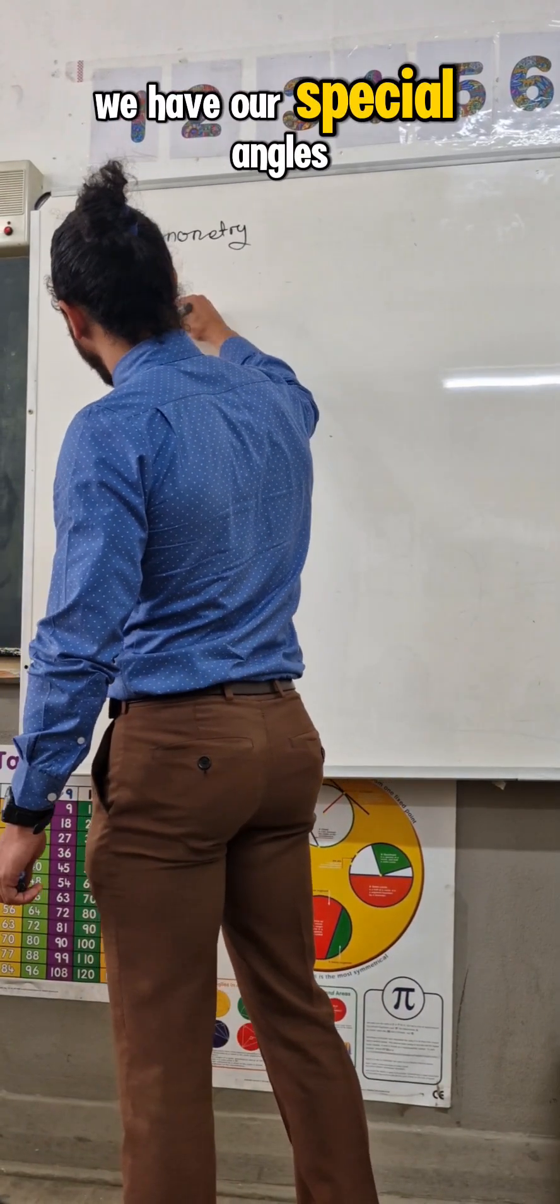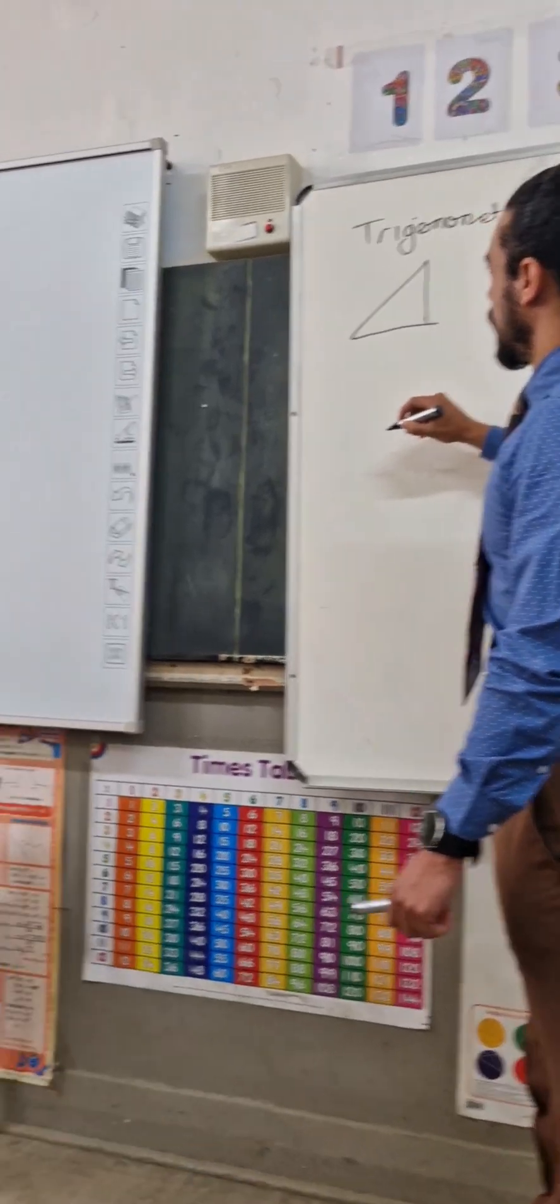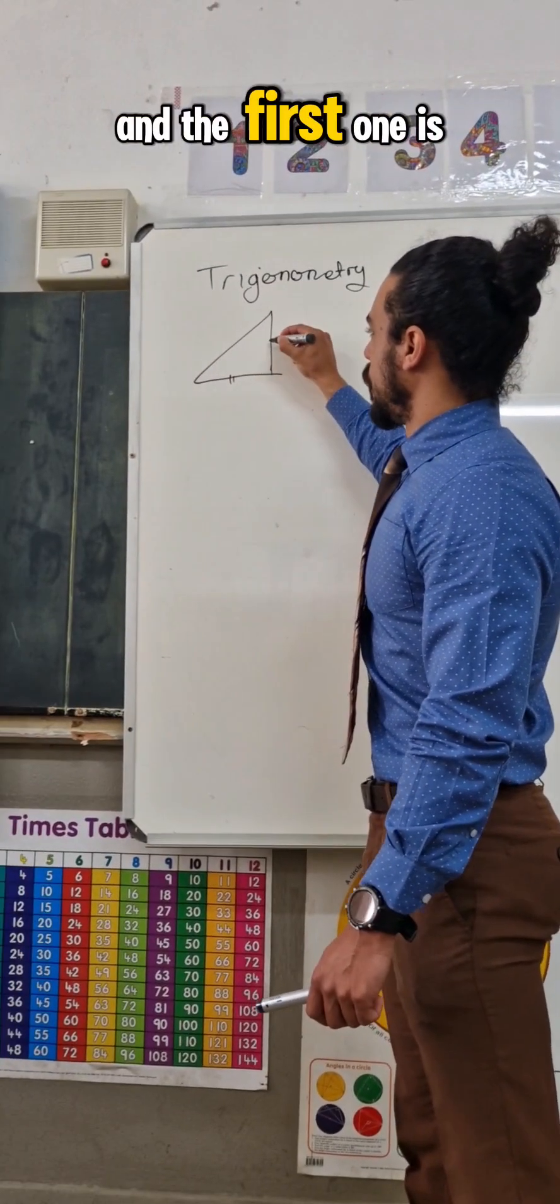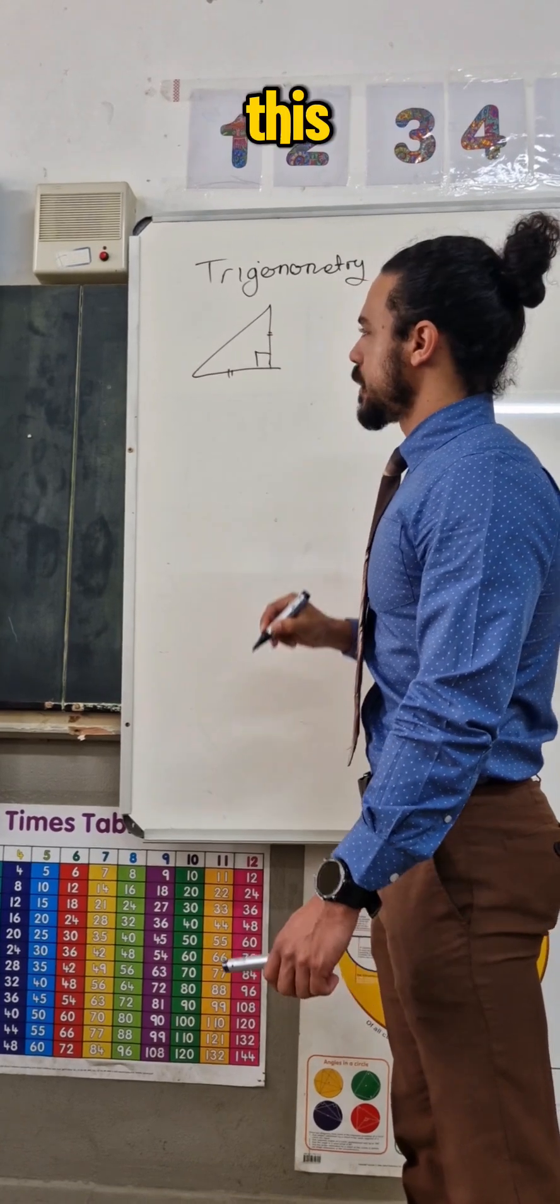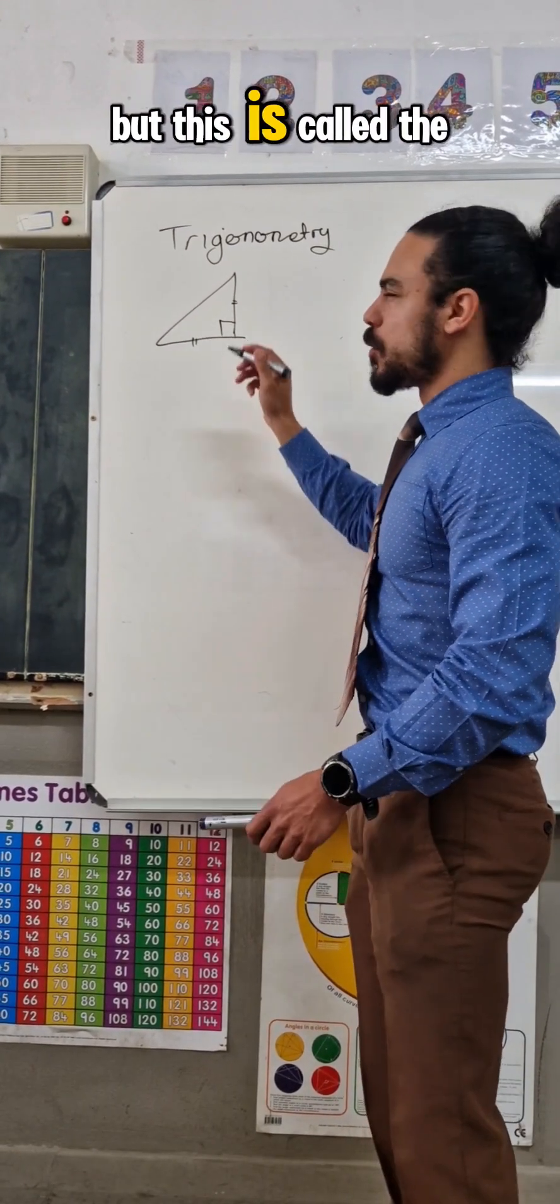We have our special angles come from our triangles. And the first one is the one that looks like this, where we say, right, this is called the right angle.